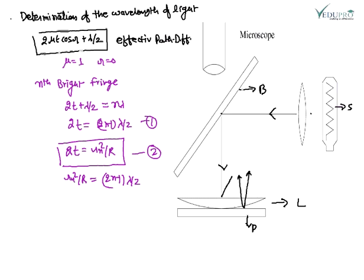From equations 1 and 2, rₙ²/r = (2n-1)λ/2. If dₙ is the diameter of the nth bright ring, then dₙ = 2rₙ. This is equation 3. Writing in terms of dₙ, we get dₙ² = 2(2n-1)λr.